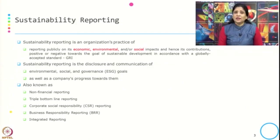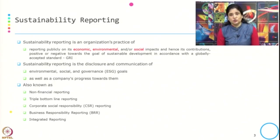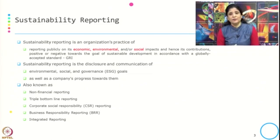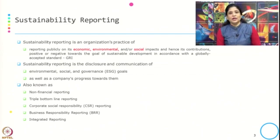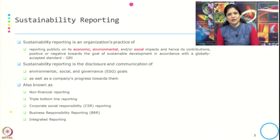Sustainability reporting is the disclosure and communication of environmental, social and governance goals — popularly known as ESG goals — as well as a company's progress towards them. From the report we learn what goals the organization has set and how much progress they have made. This reporting is also known as non-financial reporting, triple bottom line reporting, CSR reporting, business responsibility reporting and integrated reporting.